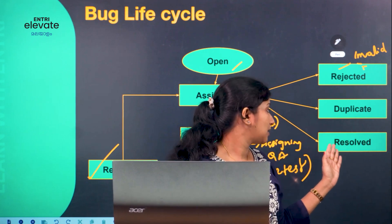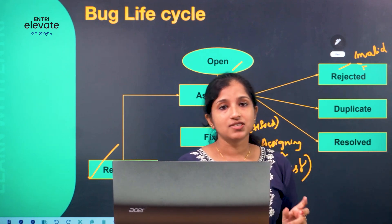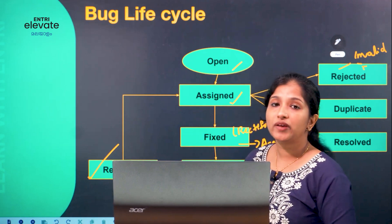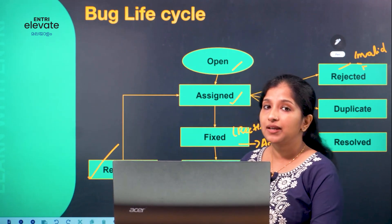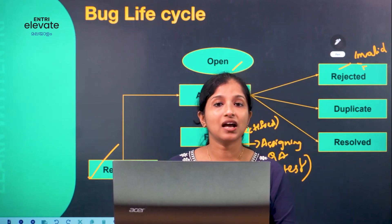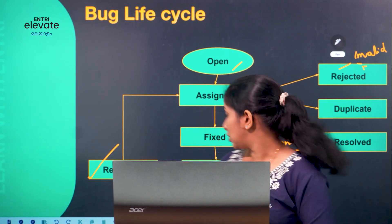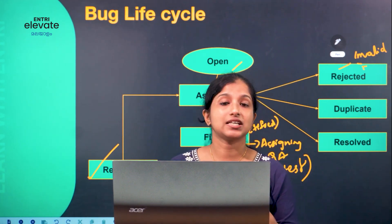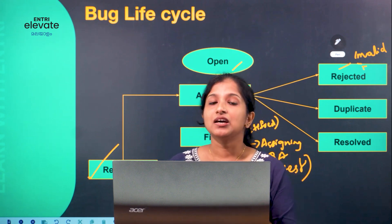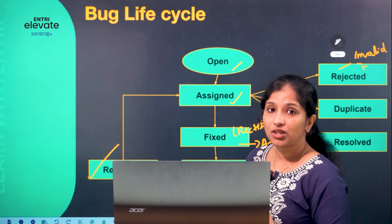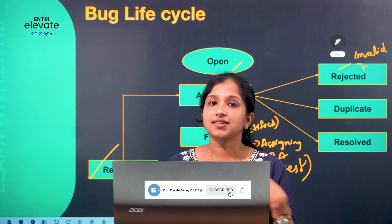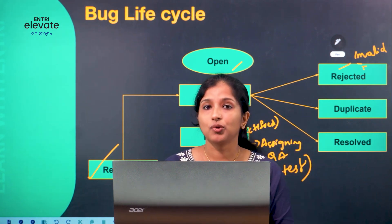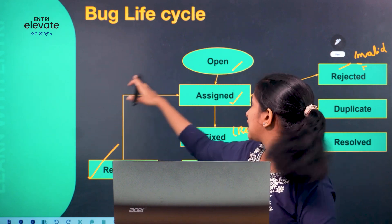After solving the problem, the status of the bug is fixed. The bug will move to QA verification. The status will be assigned to QA, who will retest the bug to check whether it is fixed or not. If it is fixed, the bug will be closed. If it is still existing and not fixed, it will be reopened.